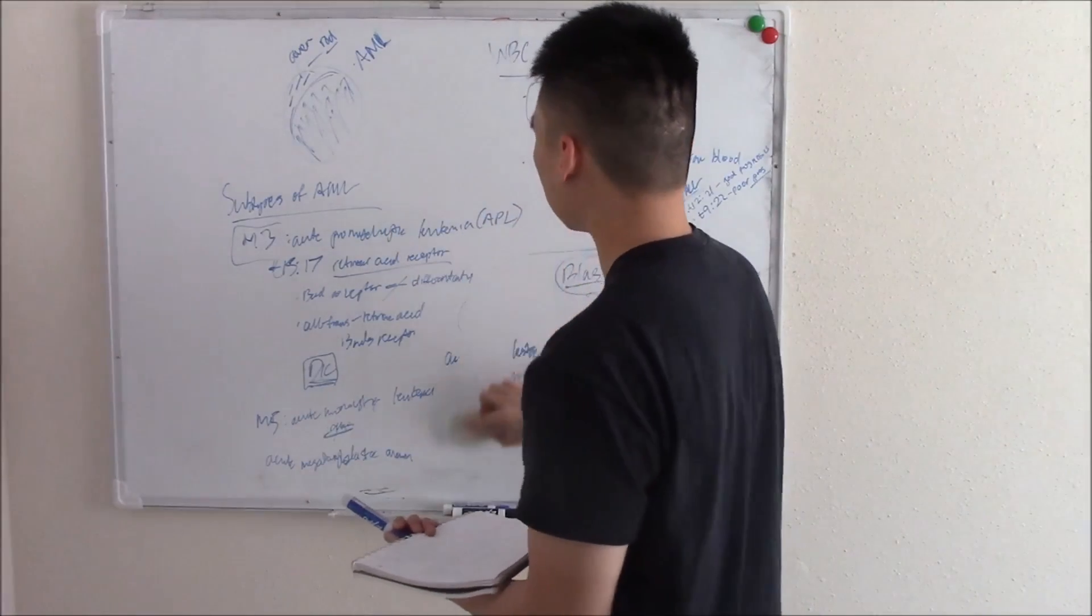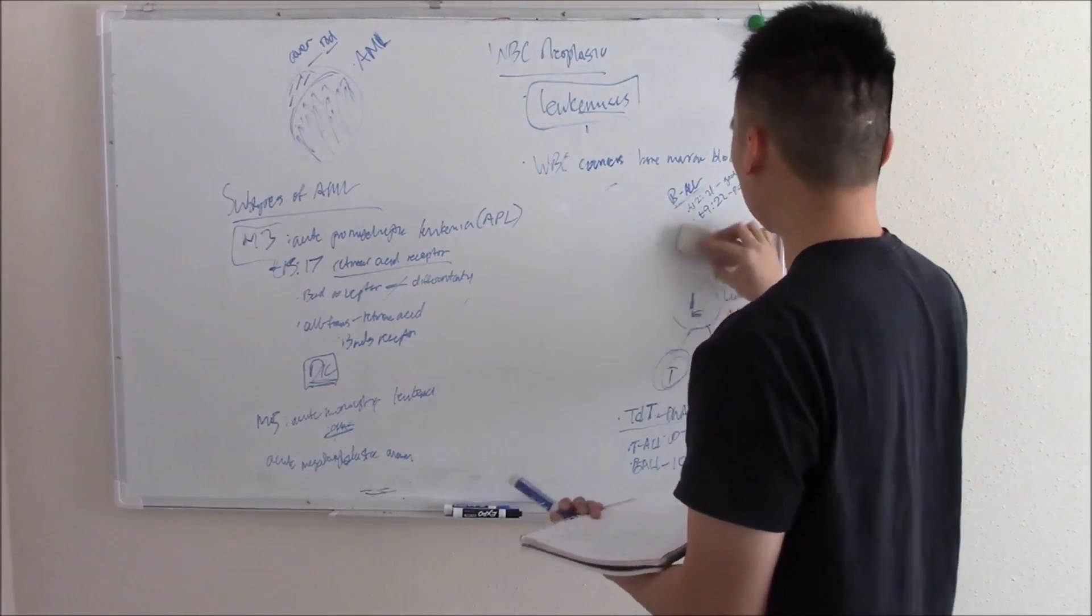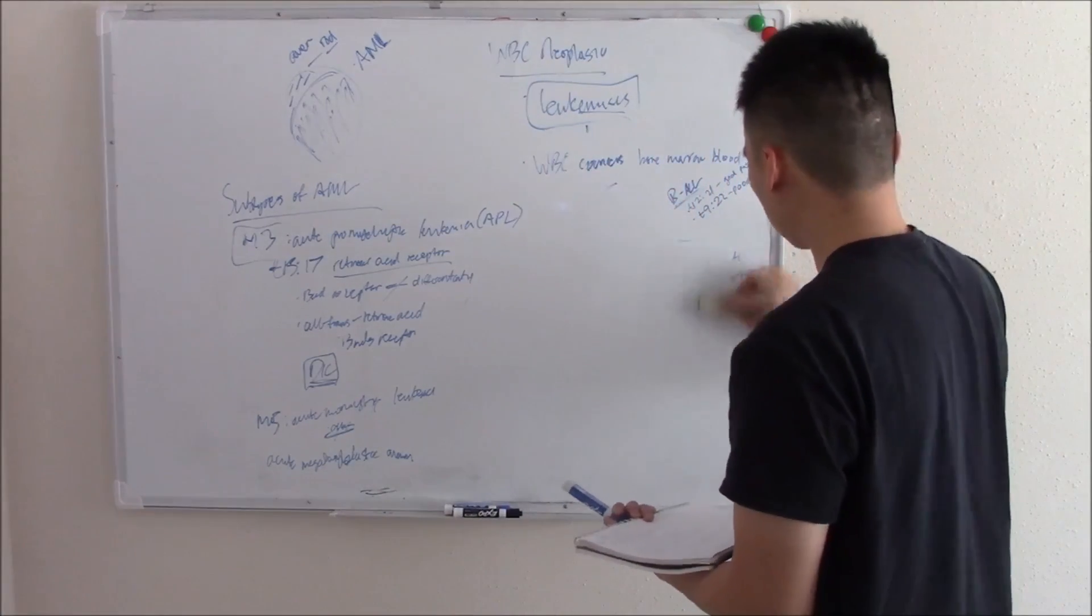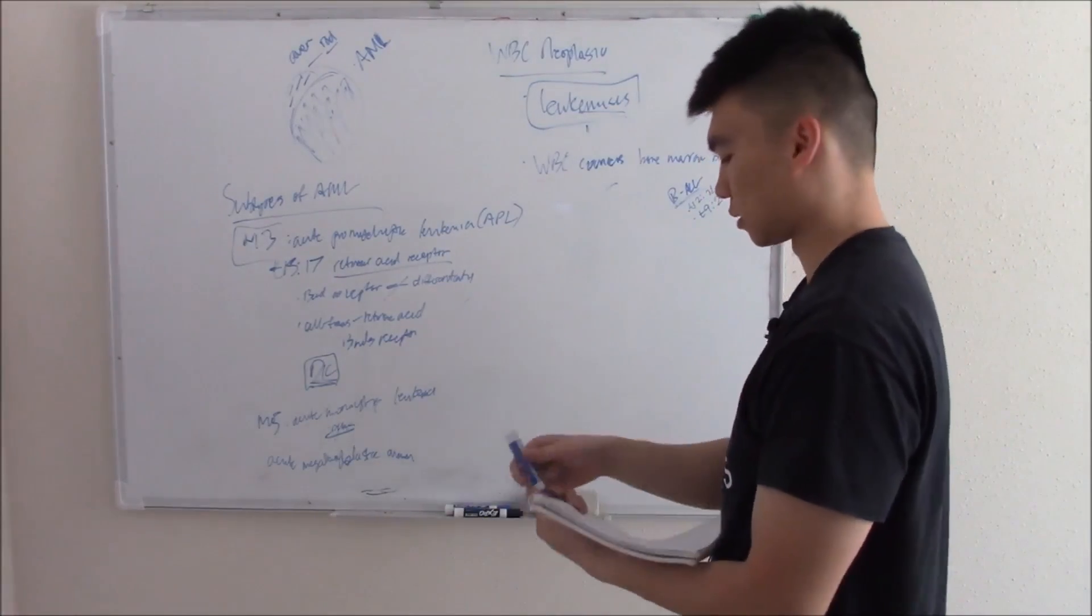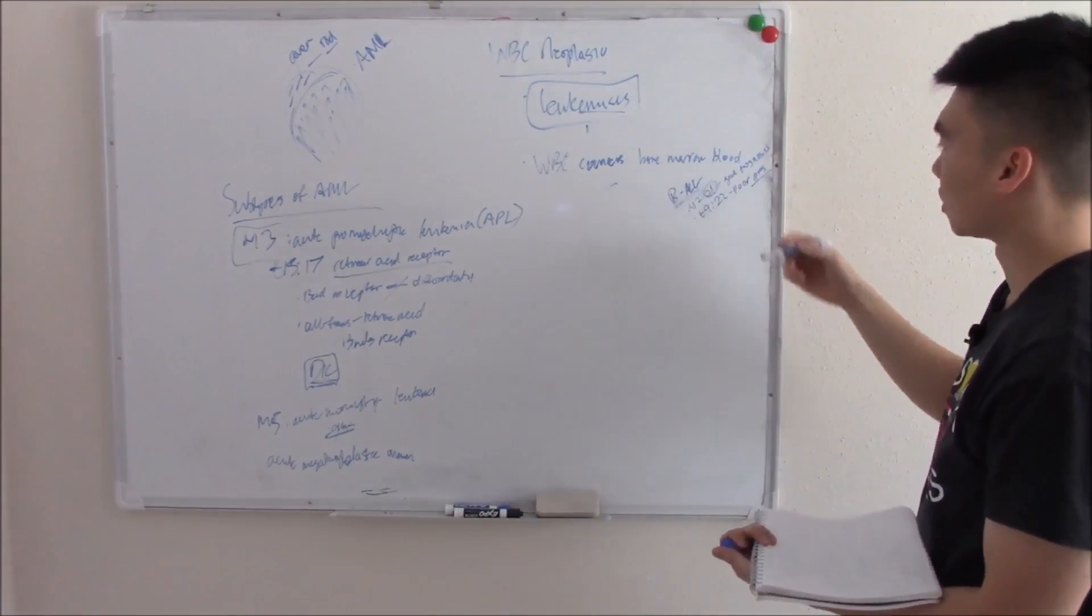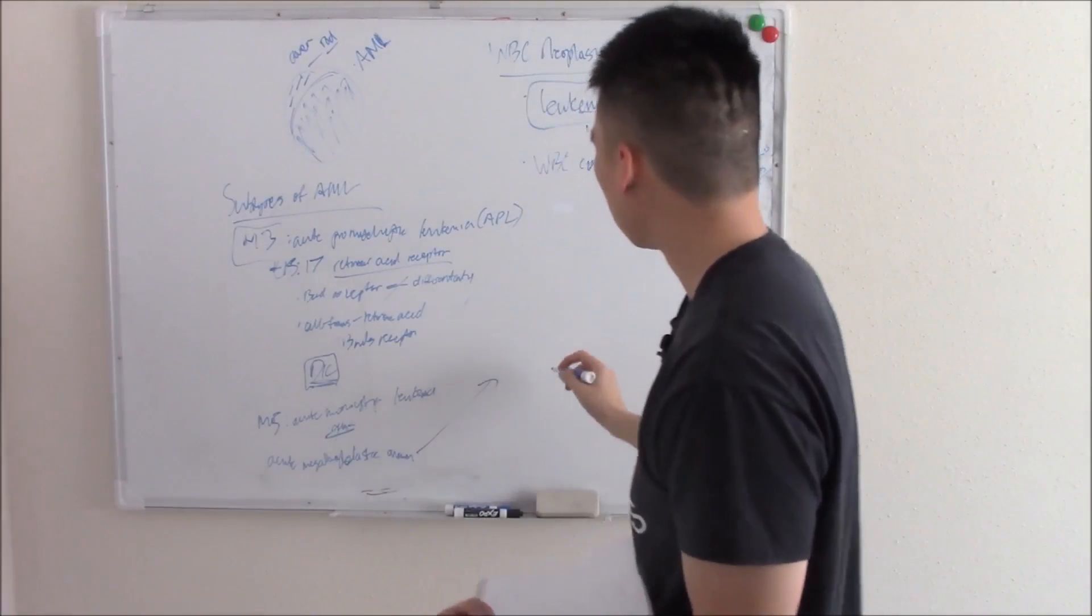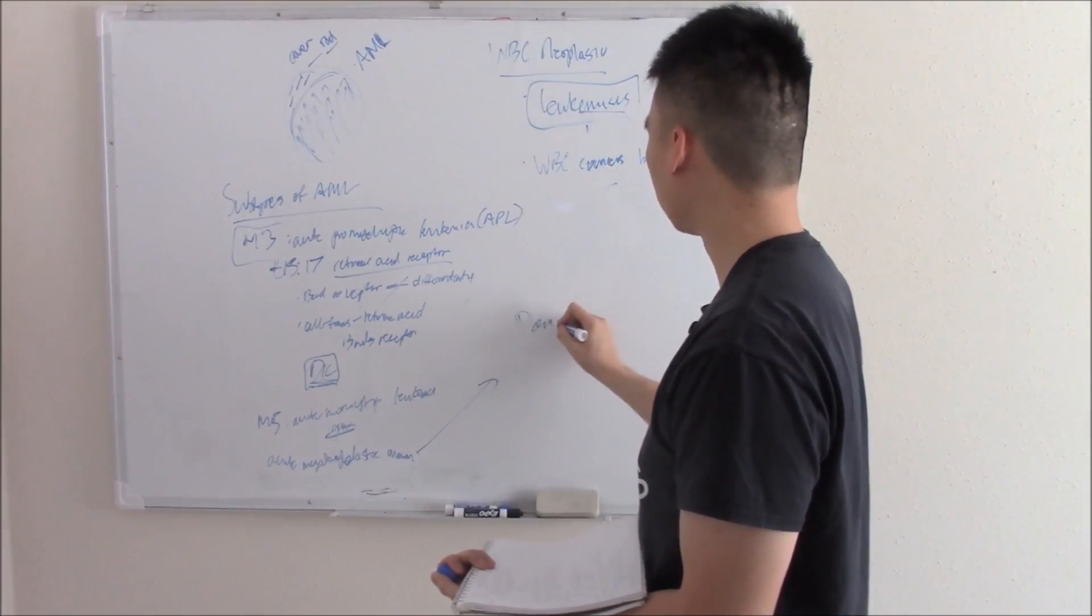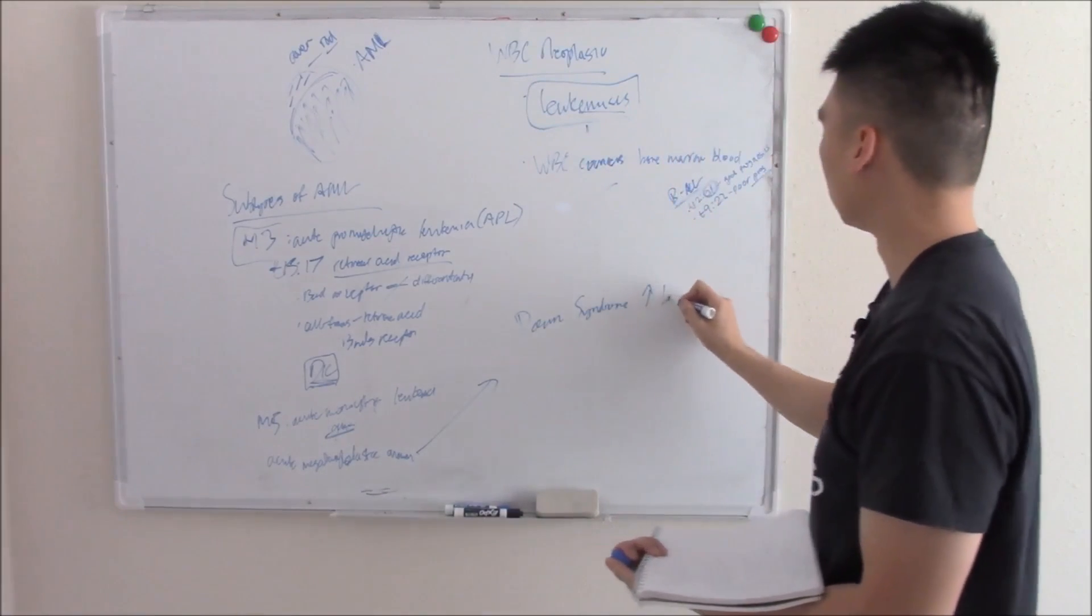The importance of this one is that it's associated with Down syndrome. Patients with Down syndrome have an increased risk of leukemia because they have chromosomal abnormalities right off the bat. Chromosome 21 is implicated in B-ALL. So Down syndrome patients have an increased risk of leukemias.